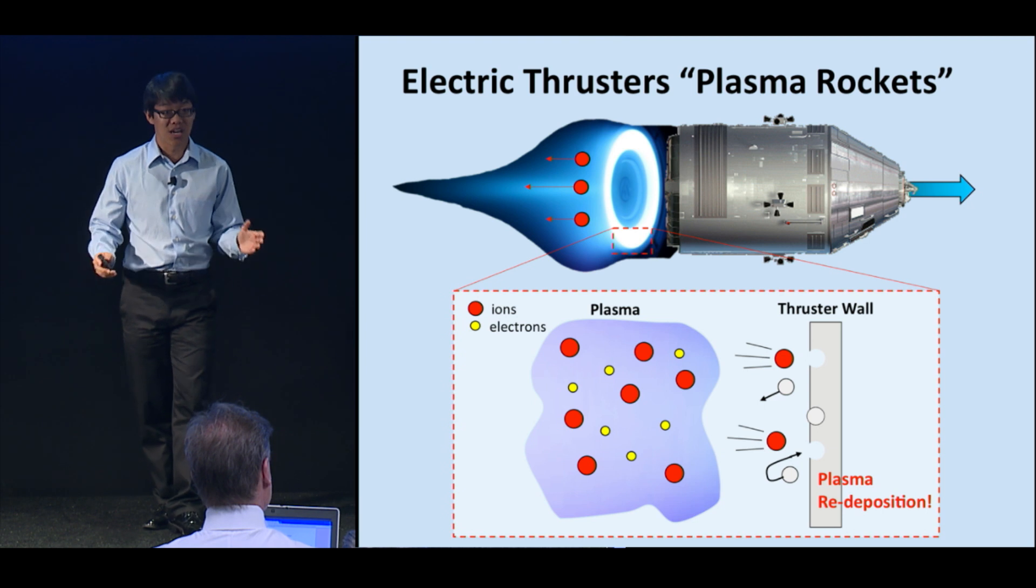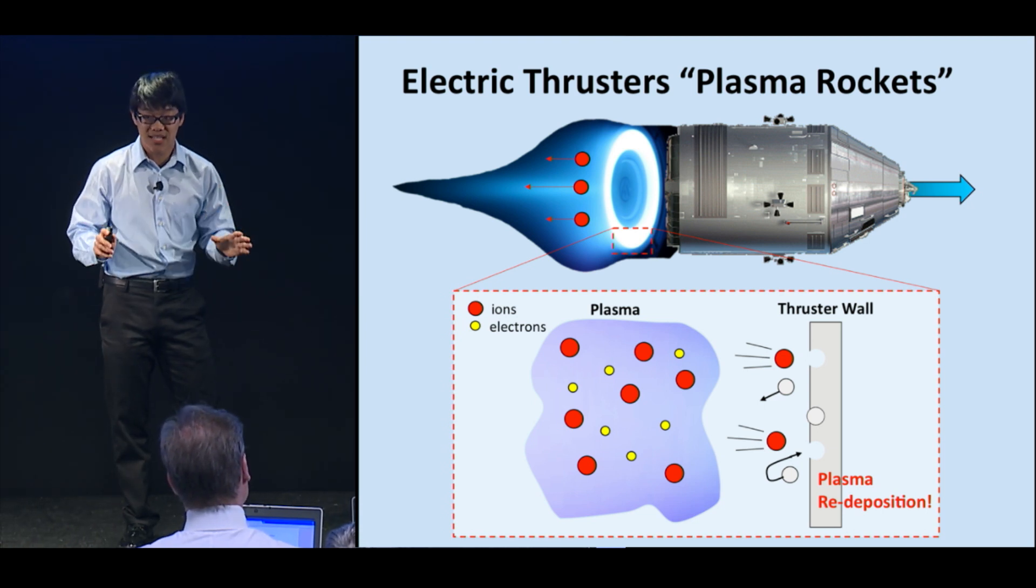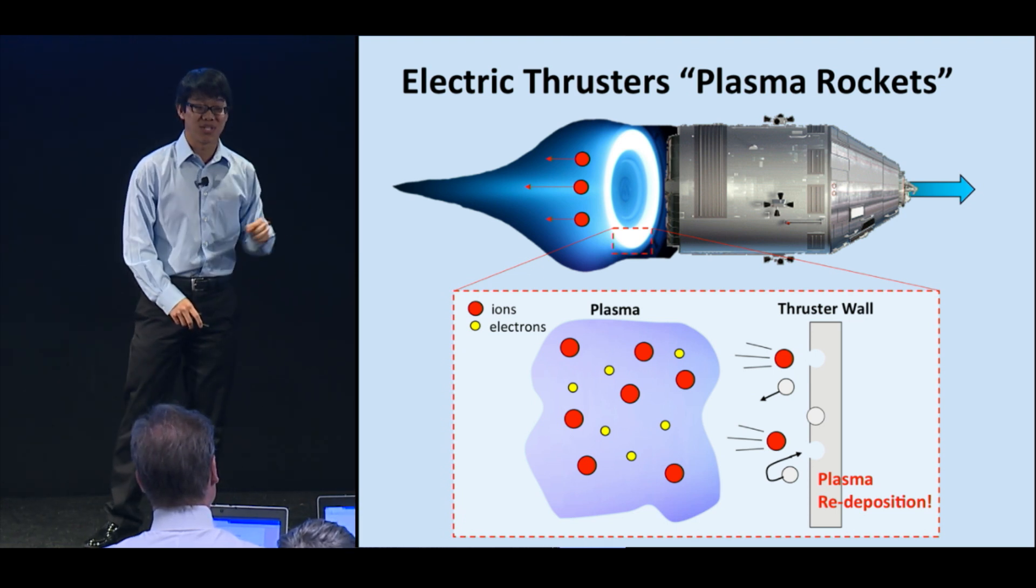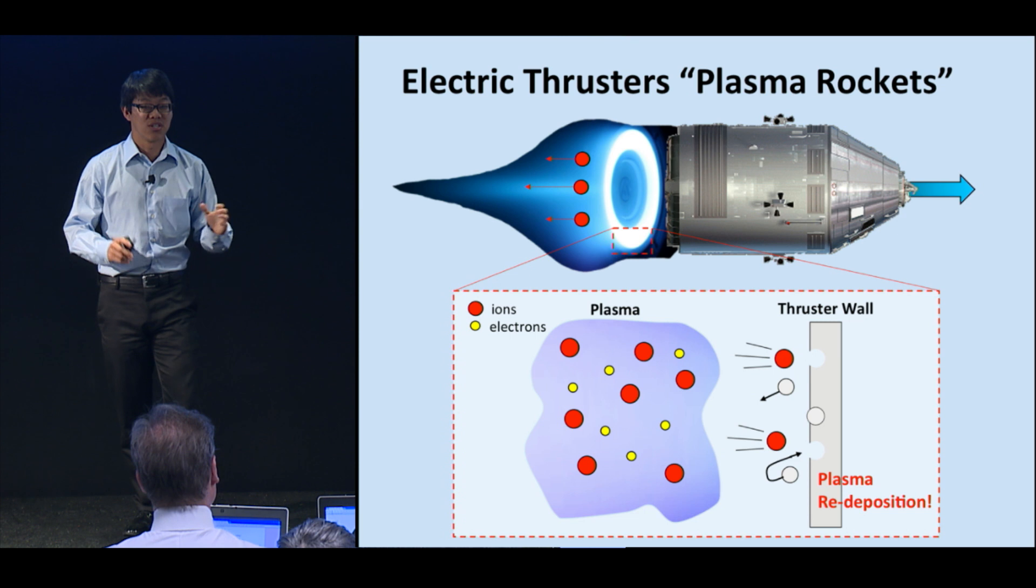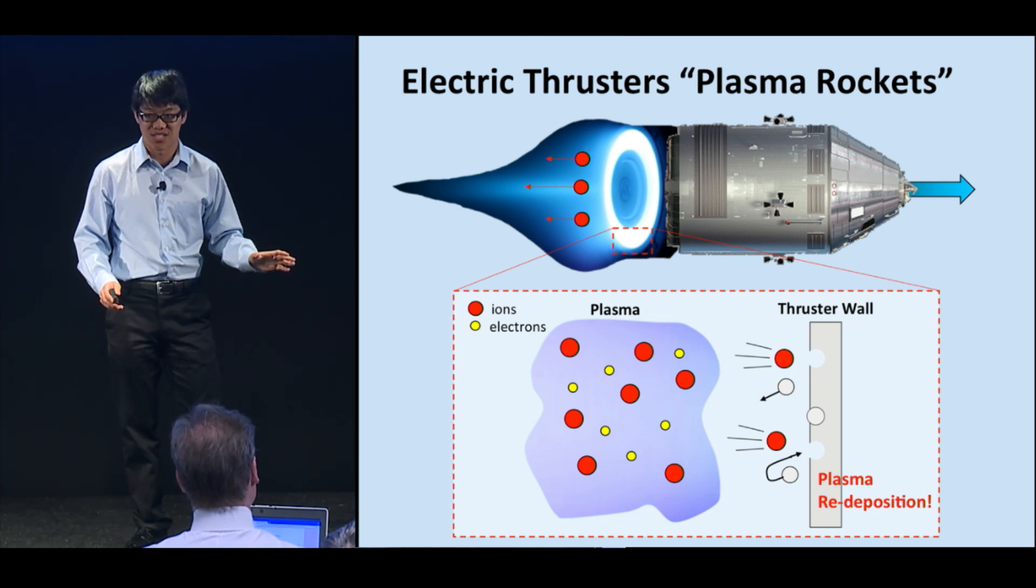For my research, I create a plasma and smash it against different types of advanced thruster wall materials in order to maximize this plasma redeposition effect. So far, I have found that I can double the lifetime of current thruster materials. That can make the difference between getting to Mars and getting stuck halfway.